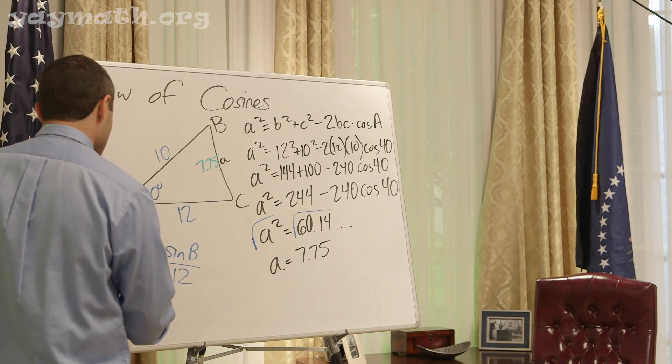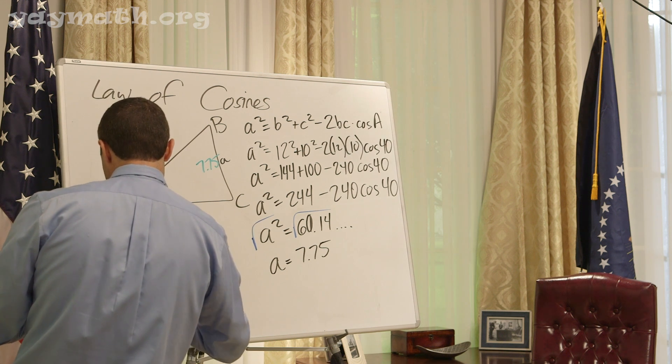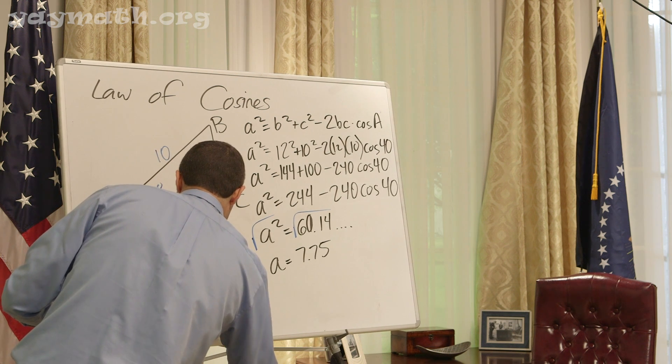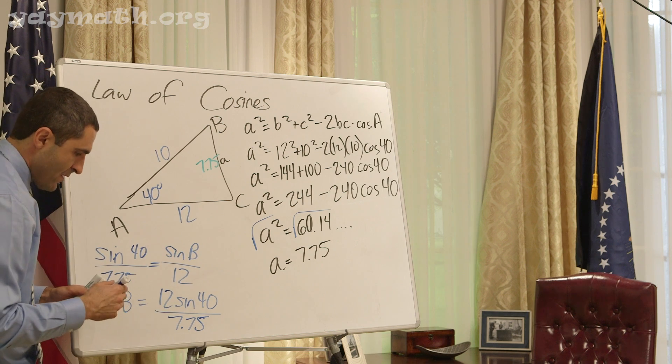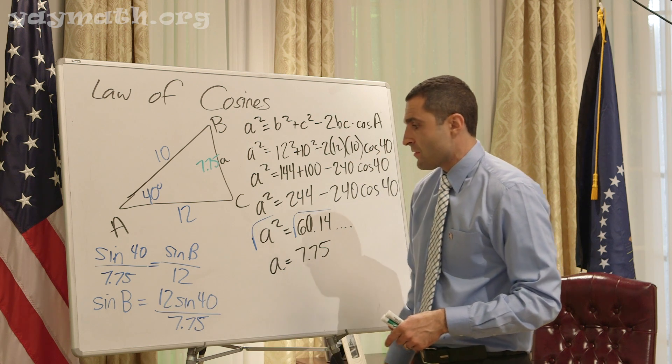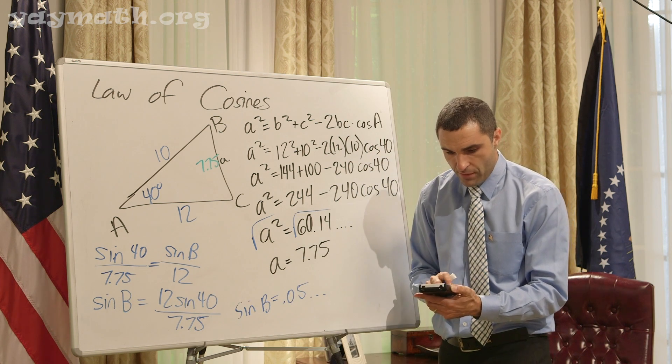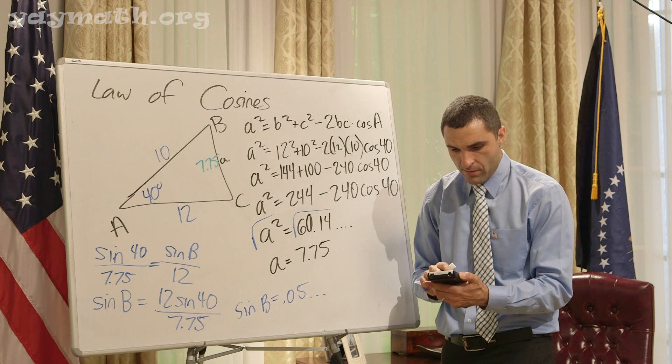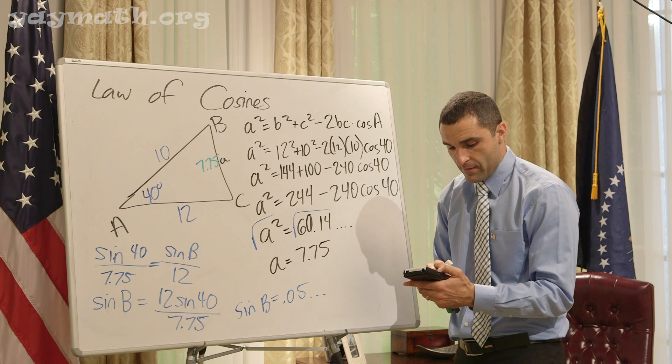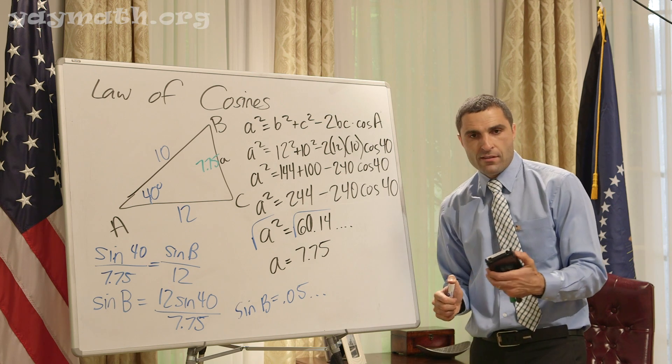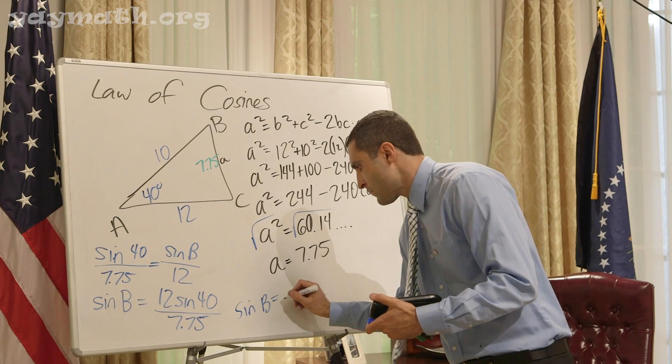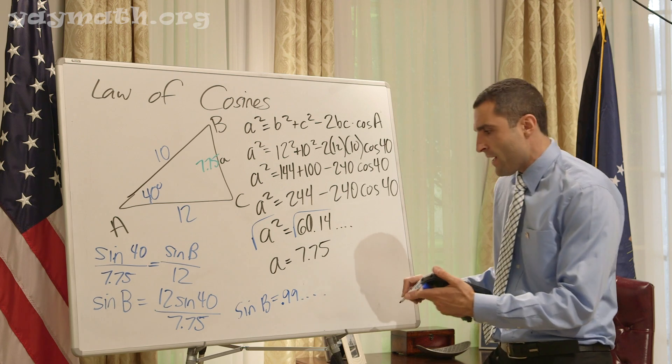Now we can solve the rest of the triangle. Let's solve this one angle. 7.75 sine b equals 12 sine 40. Sine b equals 12 sine 40 over 7.75. I got 0.99.